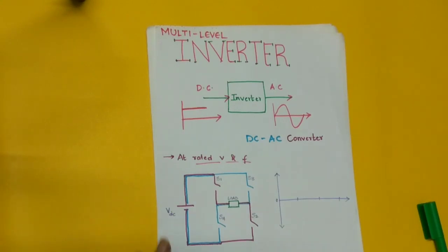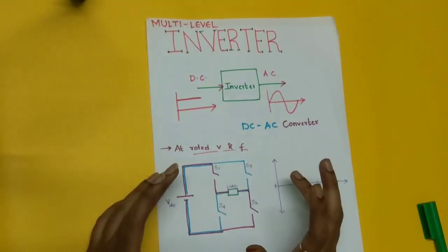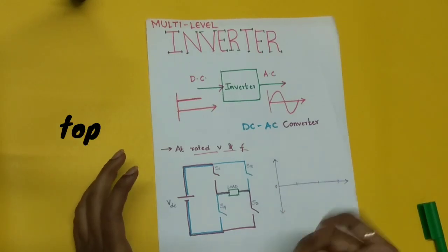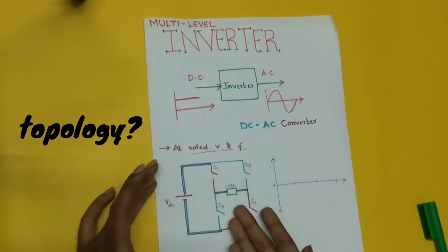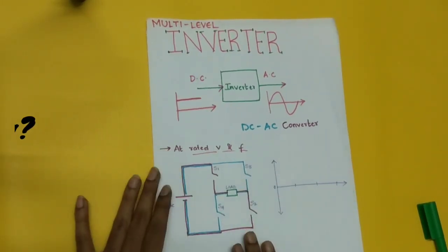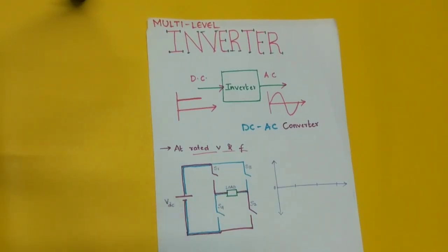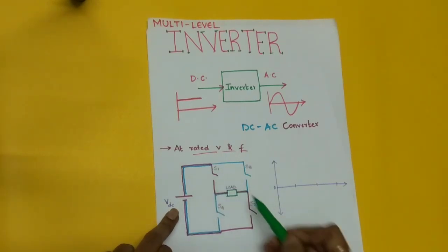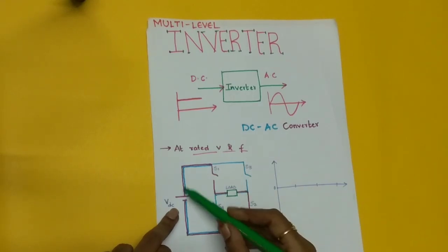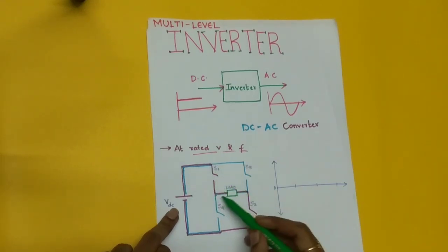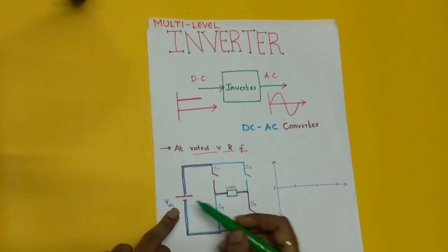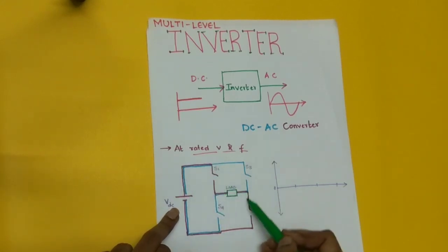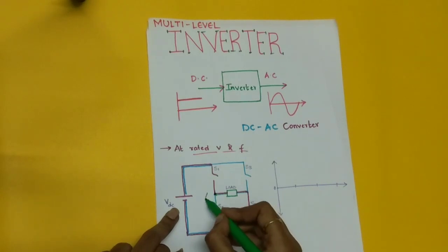Let us consider a conventional topology — topology is nothing but the way you connect the switches, the source, and the load in a circuit. This is an H-bridge topology. Suppose if I'm giving source VDC at the input and operating these two switches S1 and S2, then the current flows in the direction shown here in pink color.